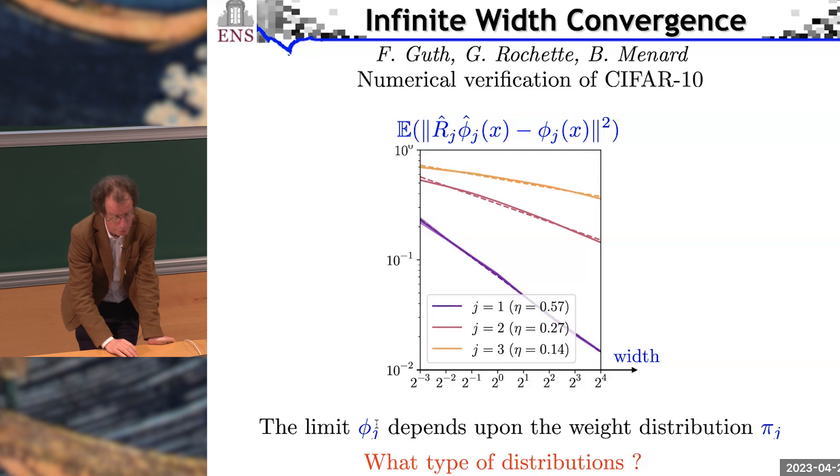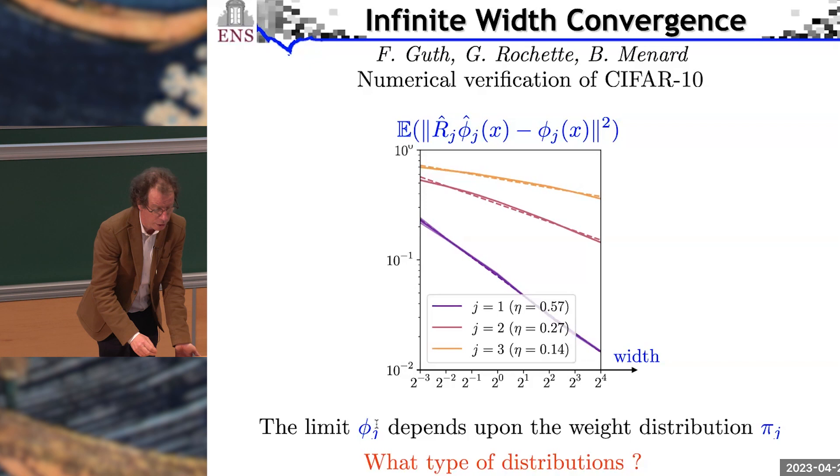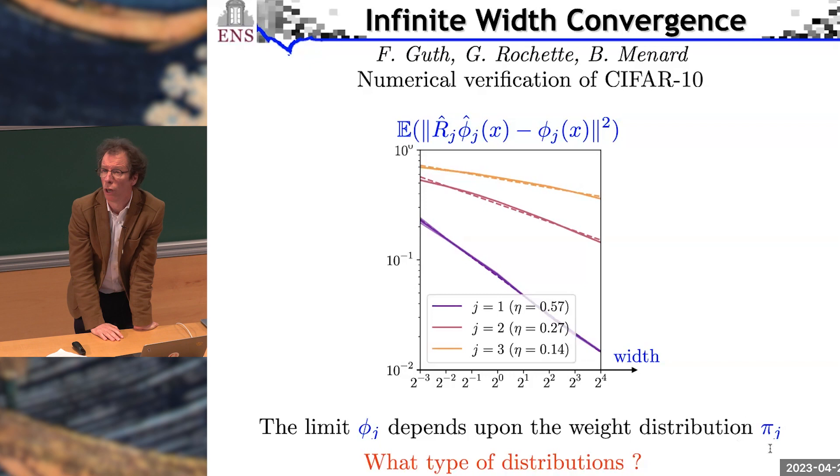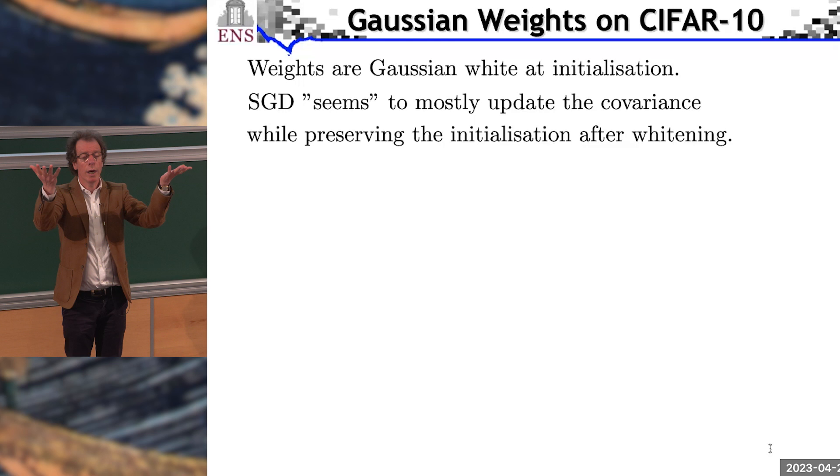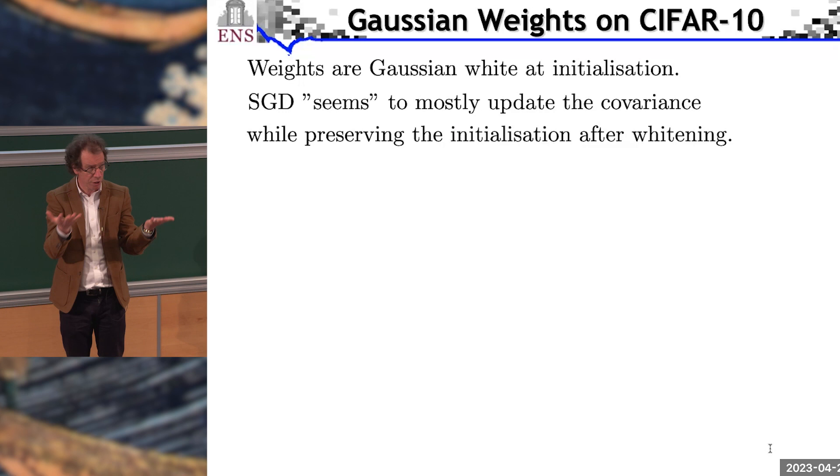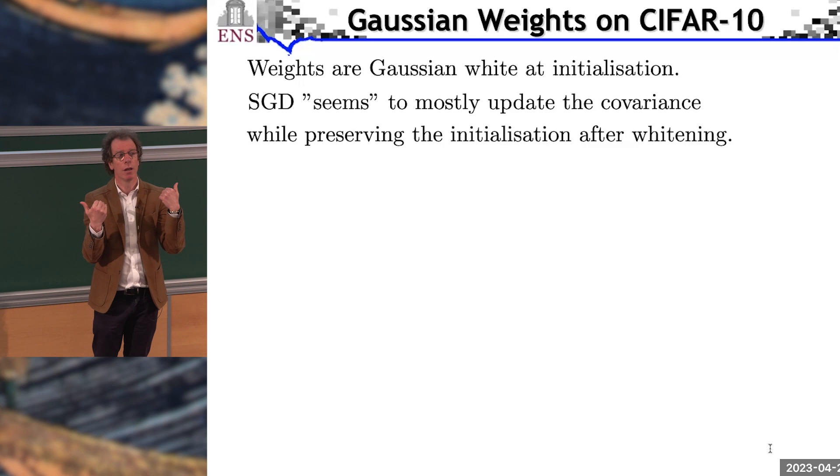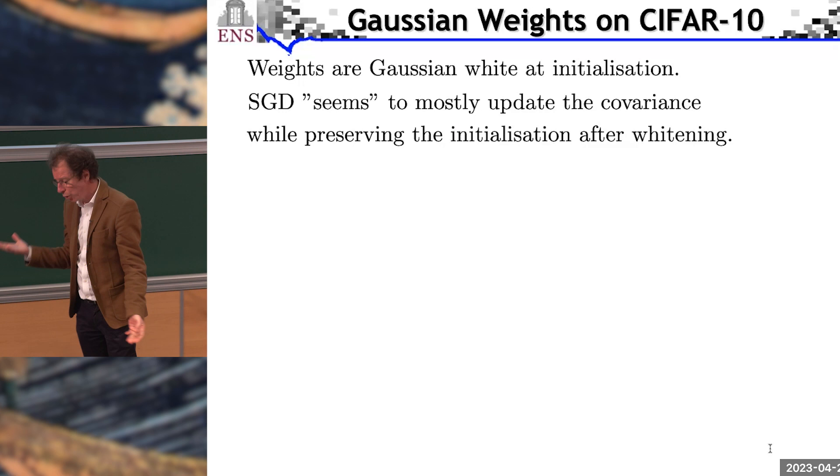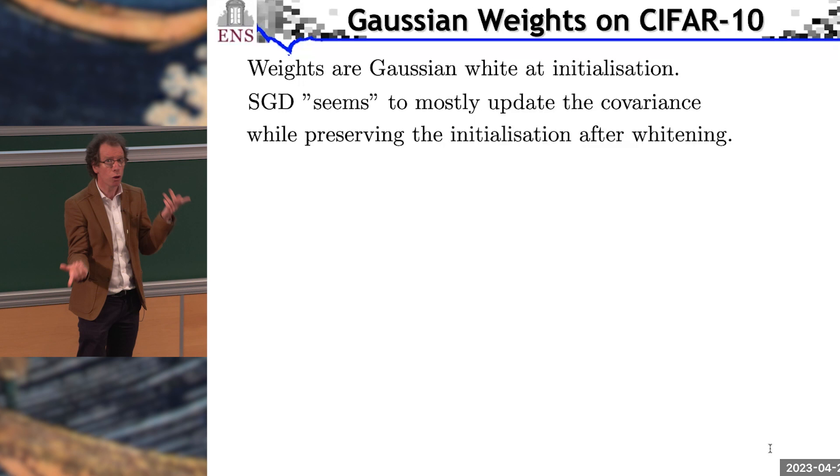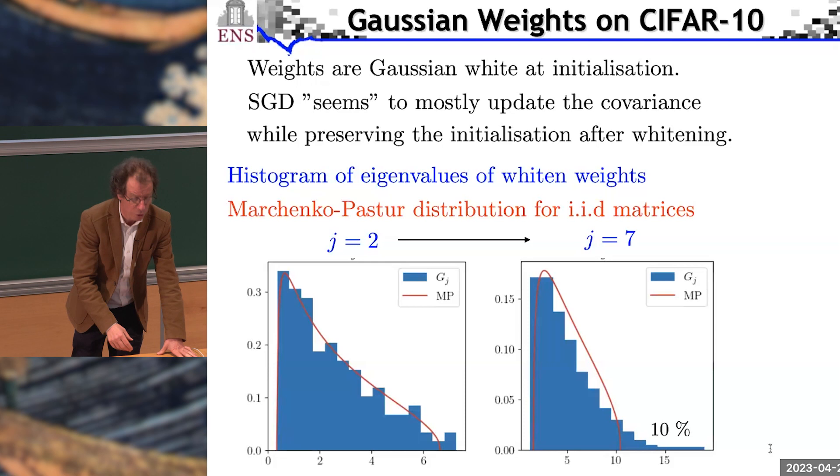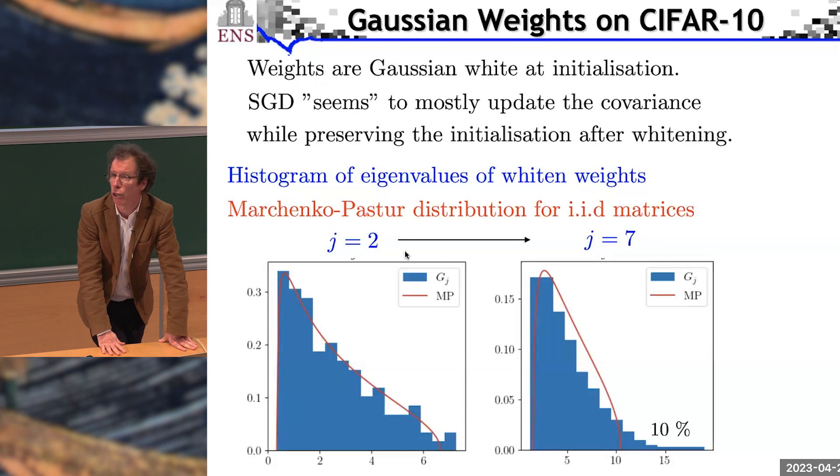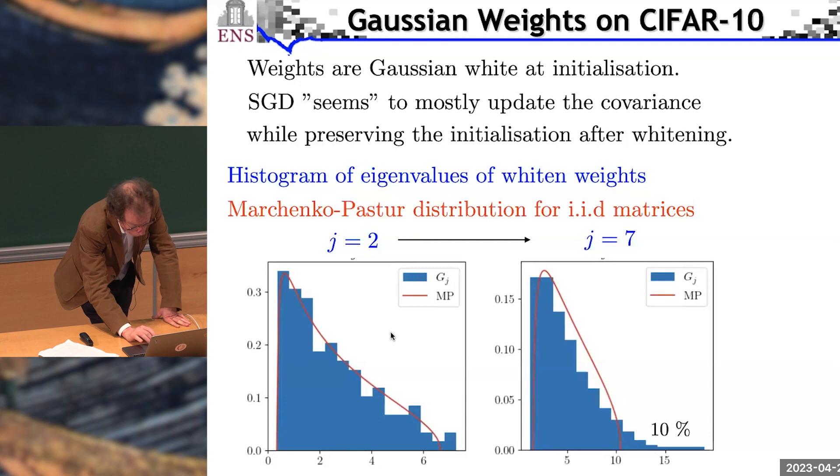Now, another observation, at least in CIFAR, is that initially the weights are Gaussian. When the iteration goes on, it's as if it's only the covariance of these Gaussians which change. They change a lot. But if you whiten the weight, you almost go back to the initialization. That has an important implication, is that the weights are almost Gaussian conditionally to the previous one. So, how do you verify that? You look, you whiten the weight, and you look at the distribution of their eigenvalue of the covariance matrix. It should converge to a well-known distribution which is called the Marchenko-Pastur distribution. For j equals 2, it's very nice. As it goes on, it remains almost true up to some outliers, about 10% here, which can have an important role. I'll come back to it. But then you have this model.